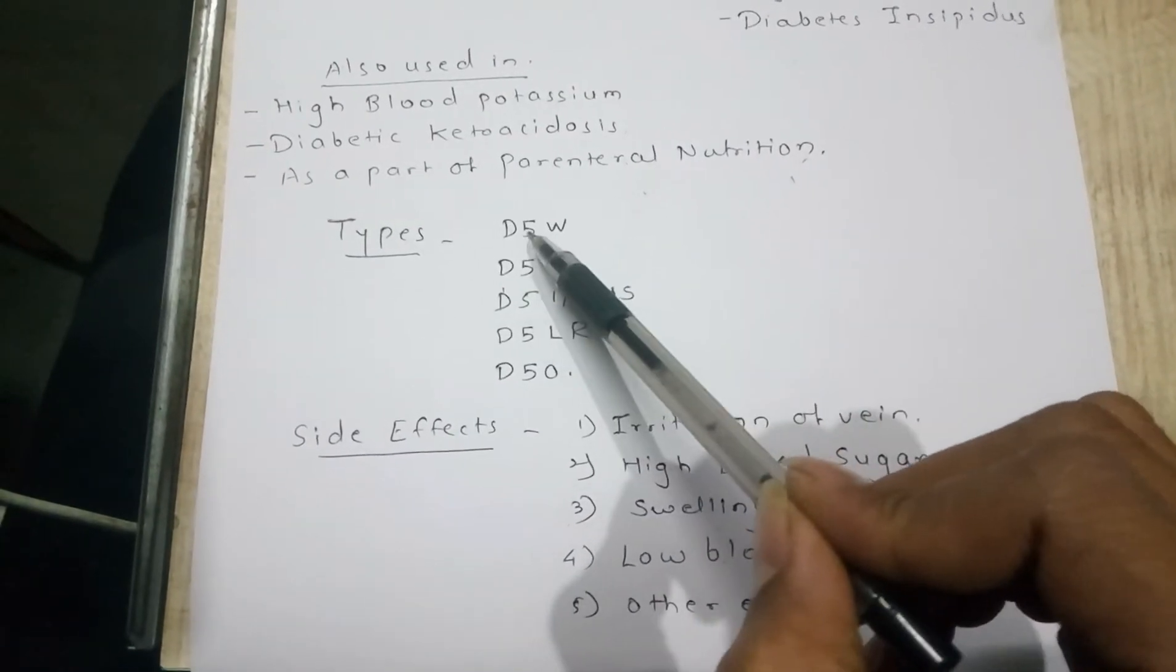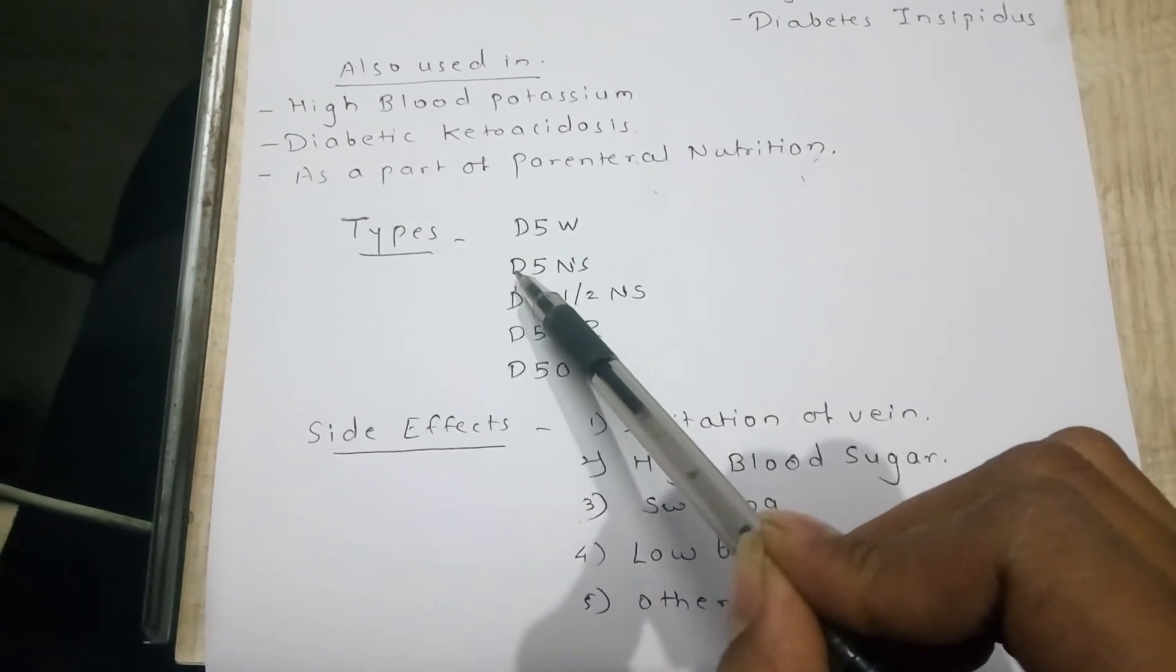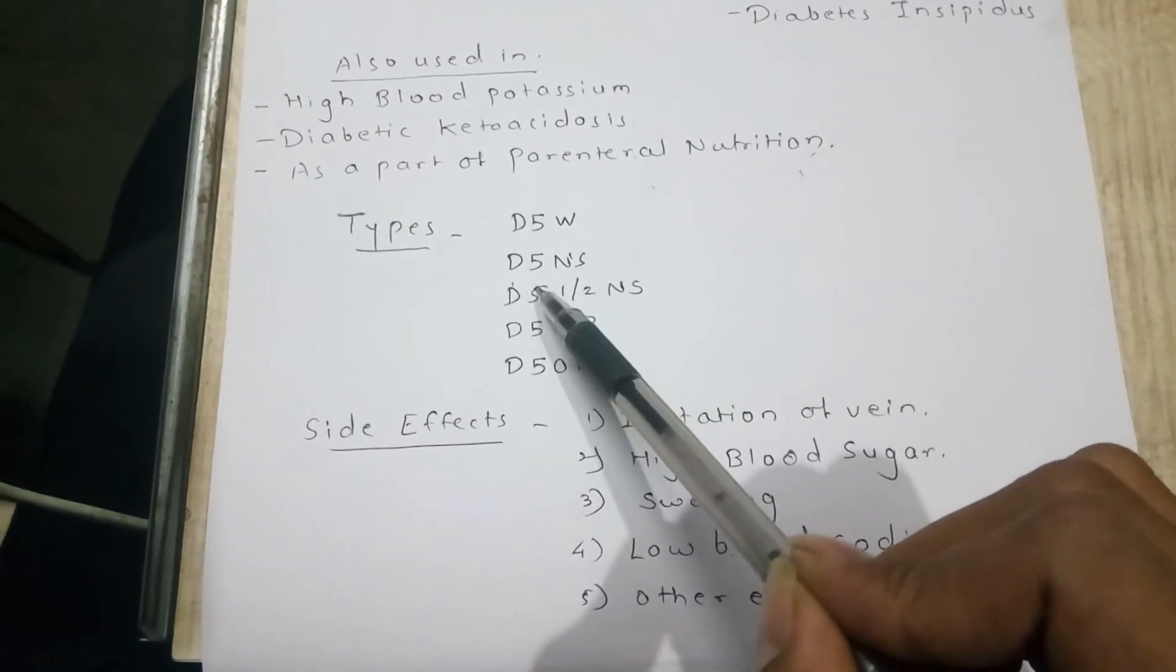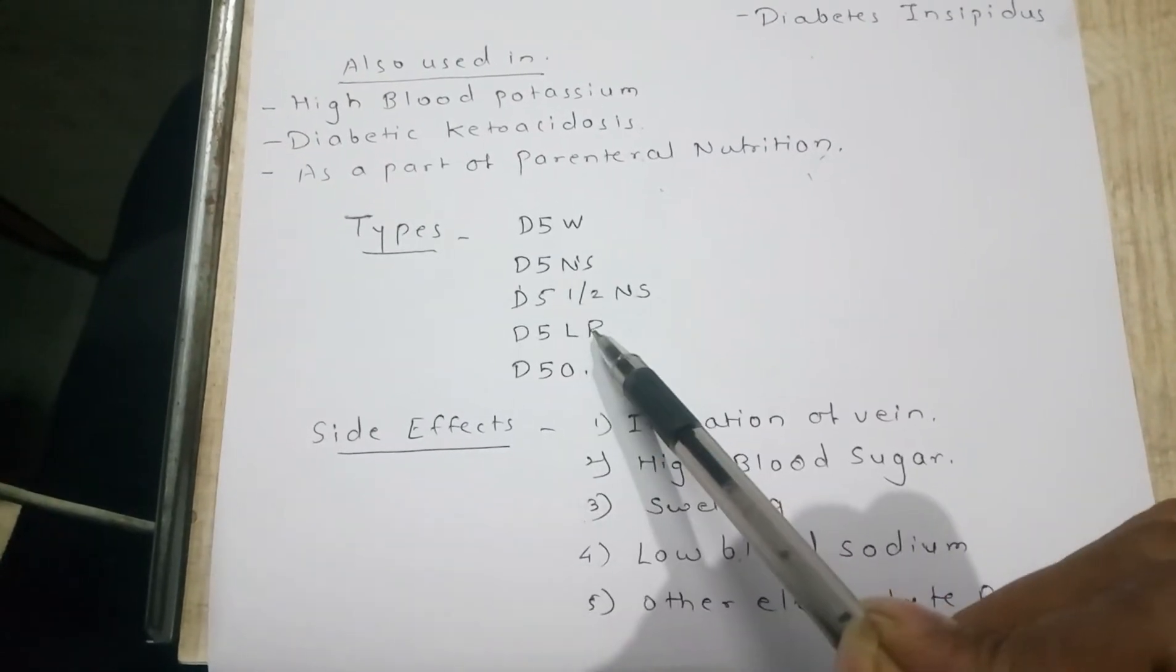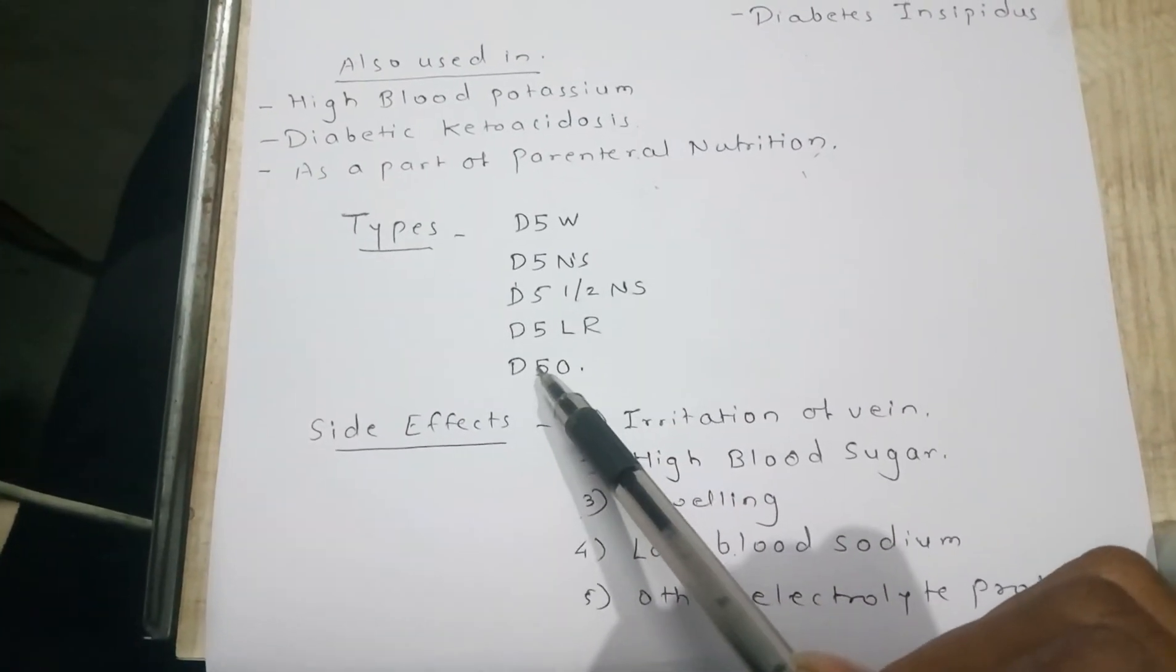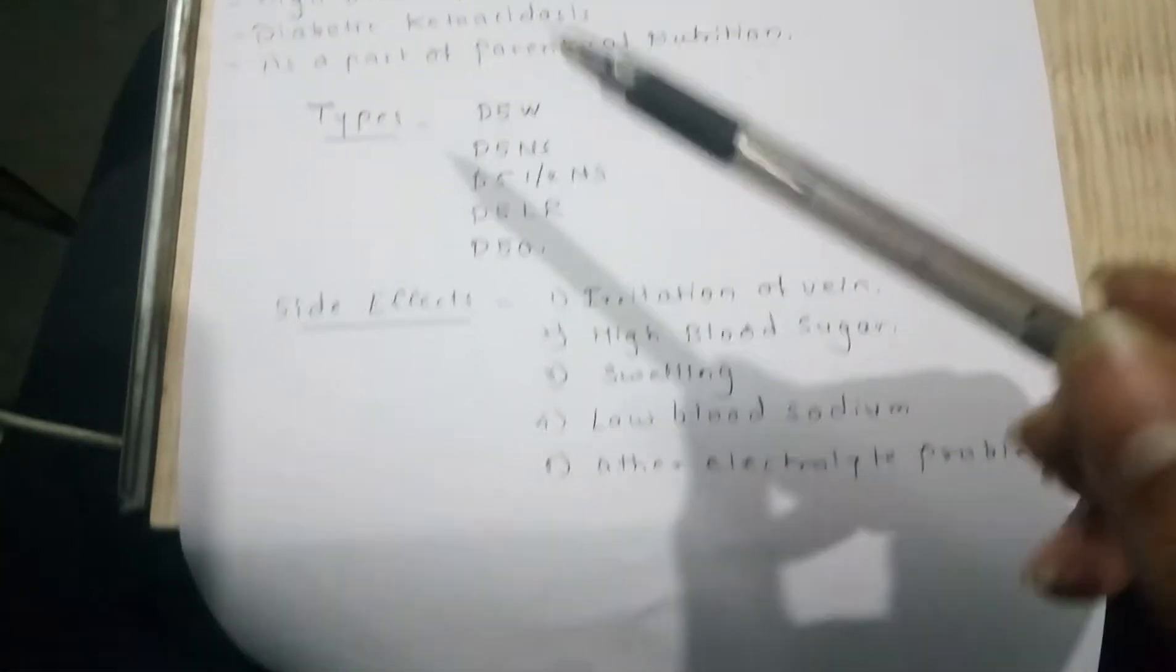The types of dextrose are D5W, which means 5% dextrose in water, 5% dextrose in normal saline, 5% dextrose in half of NS (normal saline), 5% dextrose in Ringer lactate solution, and 50% dextrose in water.